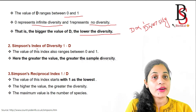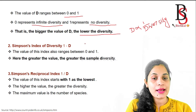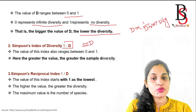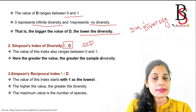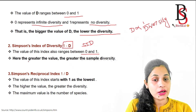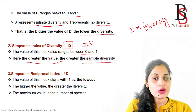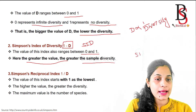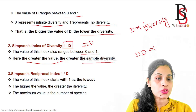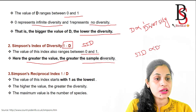The second index is Simpson's Index of Diversity (SID). It is calculated as 1 minus Simpson's Index, i.e., SID = 1 − D. Simpson's Index of Diversity is directly proportional to diversity — if the value of SID is greater, the diversity will also be greater.